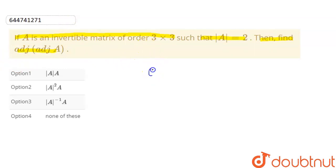In this question we have been given that order N is equal to 3 and determinant of A is equal to 2. And we need to find adjoint into adjoint of A.